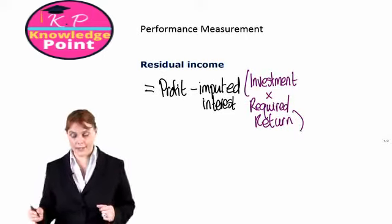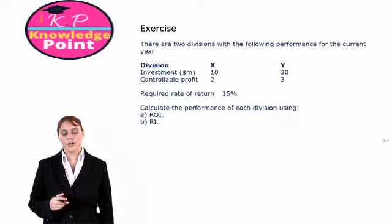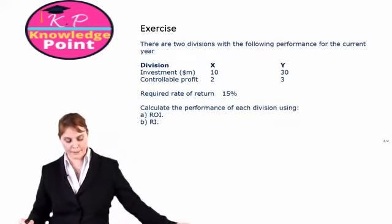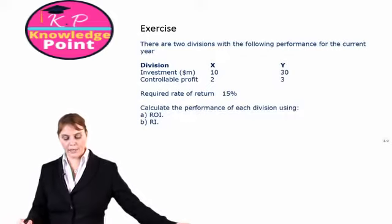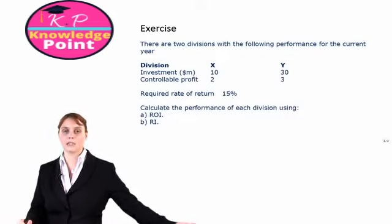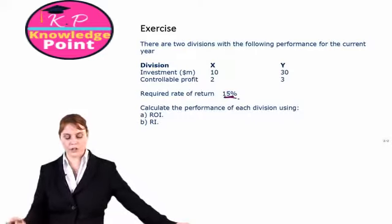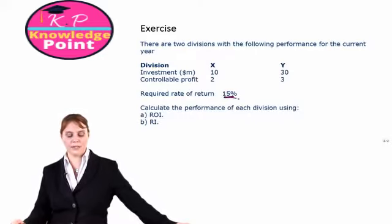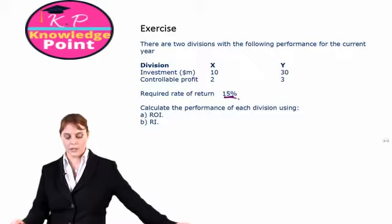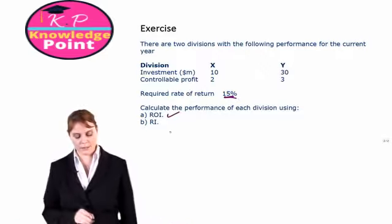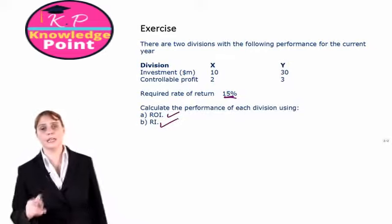So let's have a look at an exercise then. We are told there are two divisions with the following performance for the current year. We have division X and Y, we are given their investment and their controllable profit figure. The required rate of return on our investments is 15%. Now we want to calculate two things, the return on investment and the residual income.